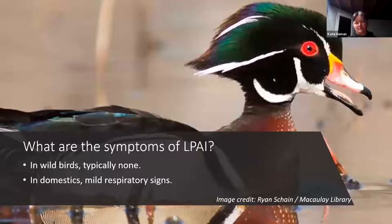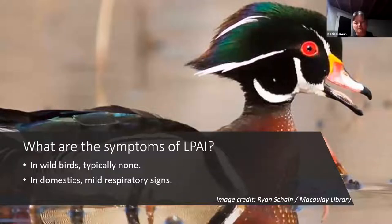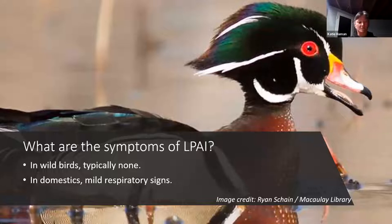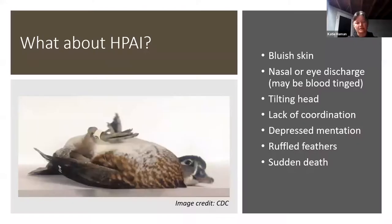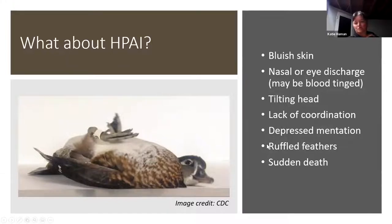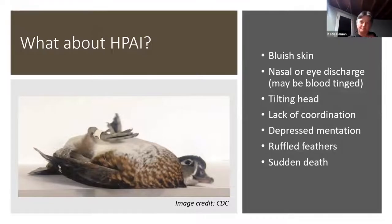The symptoms of low path avian influenza in wild birds — we don't typically see symptoms; it just circulates in them with possibly some mild symptoms. In domestics, you might see a mild respiratory illness go through the flock but not significant mortality. With high path AI in wild birds, you can see bluish skin, nasal or eye discharge, blood tinges, head tilts, torticollis, lack of coordination, depression — basically neurologic symptoms — ruffled feathers, and sudden death. We've gotten a lot of reports recently of owls literally falling dead out of the sky.